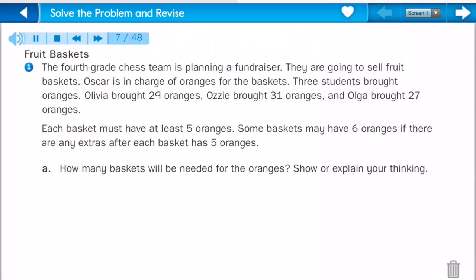The 4th grade chess team is planning a fundraiser. They are going to sell fruit baskets. Oscar is in charge of oranges for the baskets. 3 students brought oranges. Olivia brought 29 oranges, Ozzy brought 31 oranges, and Olga brought 27 oranges. Each basket must have at least 5 oranges. Some baskets may have 6 oranges if there are any extras after each basket has 5 oranges.